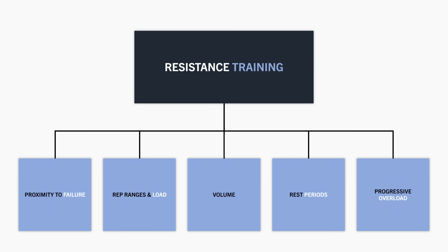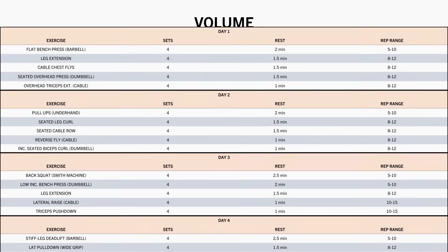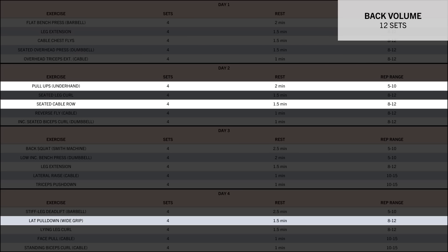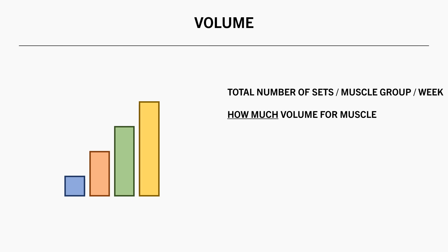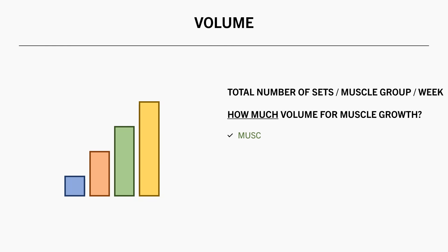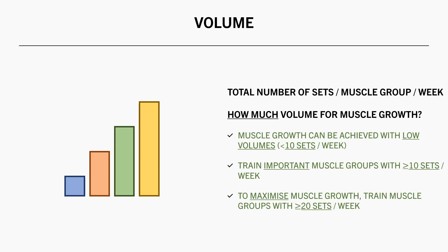Assuming we are training close to failure and within the effective hypertrophy rep ranges, the next important variable is volume — the total number of sets a muscle is trained with per week. For example, if the back is trained with 8 sets on one day and 4 sets on another, total weekly volume for the back would be 12 sets. This meta-regression found that more volume tends to result in greater muscle growth, though with diminishing returns. For muscles you want to prioritise, aim for at least 10 total sets per week, and up to 20 sets per week to maximise muscle growth.